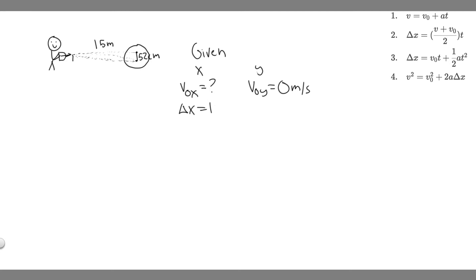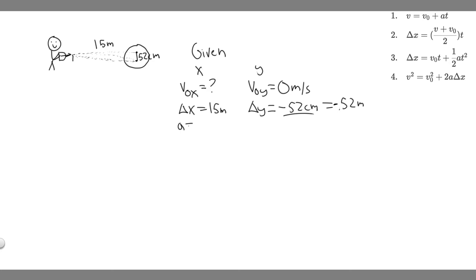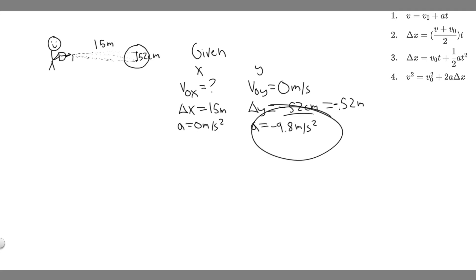We know Δx = 15 meters. In the y-direction, the arrow goes down 52 centimeters, so Δy = −0.52 meters (negative because down is negative). The acceleration in the x-direction is 0 m/s², and the acceleration in the y-direction is −9.8 m/s² due to gravity pulling the arrow down.